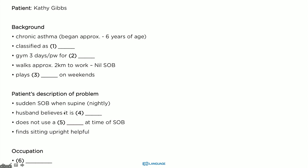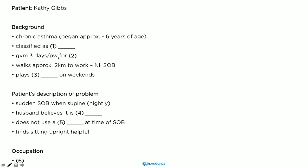If I look here, some of these I can predict. This one I can't classify — I have no idea what that is. Gym three days per week — some sort of sport or exercise, I guess. Number three: 'plays' — well, this is definitely a sport, plays something on weekends. Husband believes it is — I have no idea what that one is, I can leave that one. 'Does not use' — this tells me that this needs to be a noun, a thing, at time of shortness of breath. Here we have the heading 'Occupation', so hopefully that makes it easier. Let's now get straight into it.